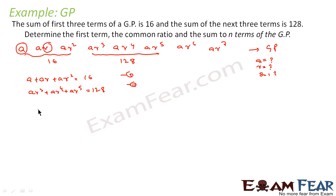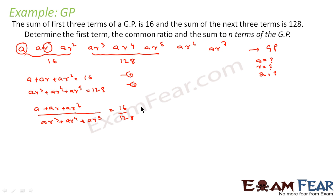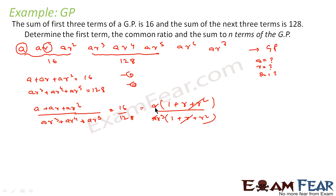We divide equation 1 by equation 2: (a + ar + ar²) / (ar³ + ar⁴ + ar⁵) = 16/128. Taking a common from the numerator and ar³ common from the denominator, we get (1 + r + r²) / [ar³(1 + r + r²)] which simplifies to 1/r³ = 16/128 = 1/8. Since 1/8 = 1/2³, we get r = 2.